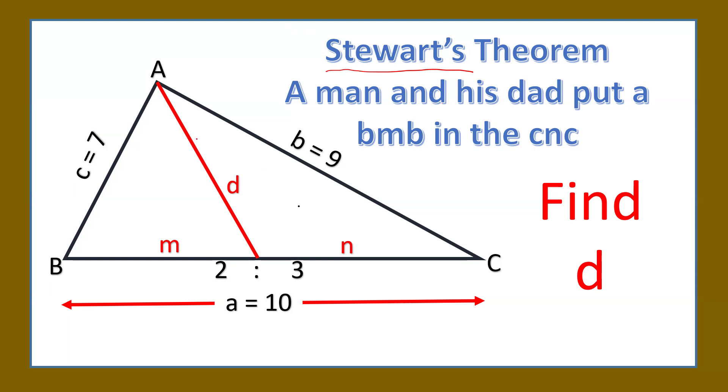Now first of all, what is given and what we have to calculate. It is given that in a triangle, this side is 10 centimeters which is opposite vertex A. Opposite vertex B, the side is 9. Opposite vertex C, the side is 7.